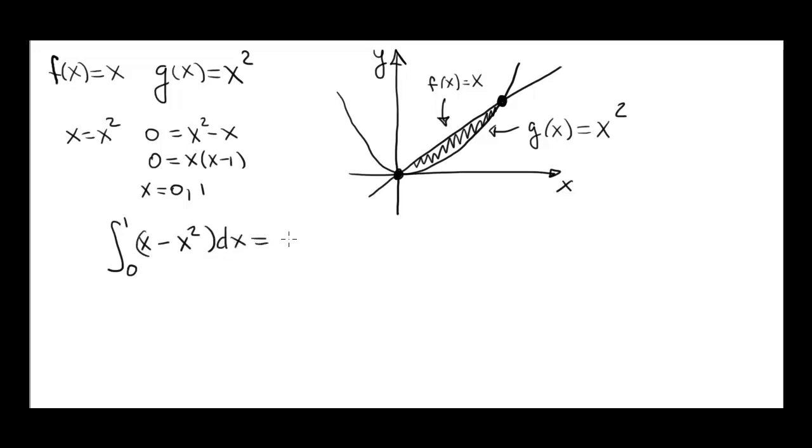And these are simple integrals. We end up with 1 half x squared minus 1 third x cubed, evaluated from 0 to 1.